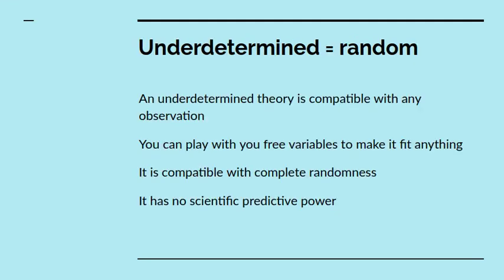Now mathematically you say a set of equations are under-determined when there aren't enough equations to constrain the free variables. And another way of saying that is that if you've got an under-determined theory, it's essentially random. An under-determined theory is compatible with any observation. You can play around with the free variables to make it fit anything and has no scientific predictive power. This is the point that Leibniz makes, that you can put down any random series of dots and fit a function through it. But unless your function contains a lot less free variables than observations, it can't be treated as a law.